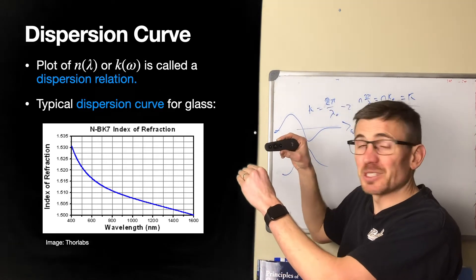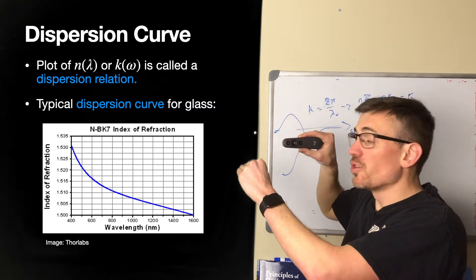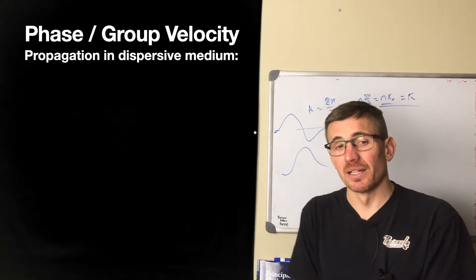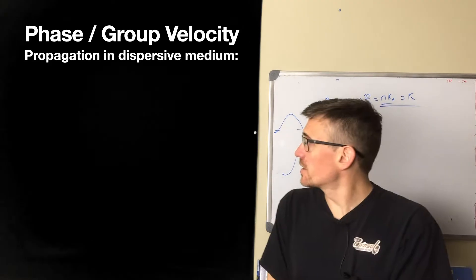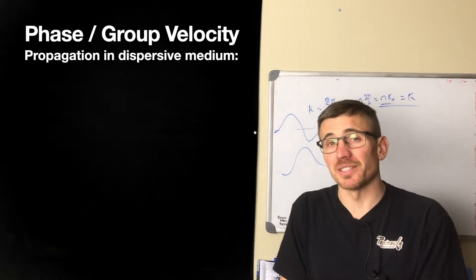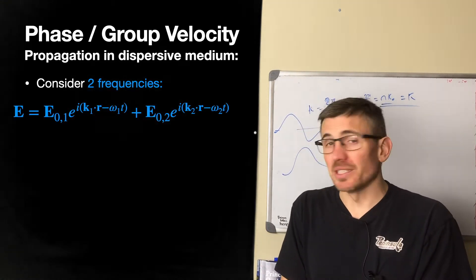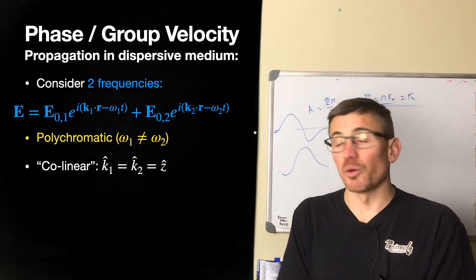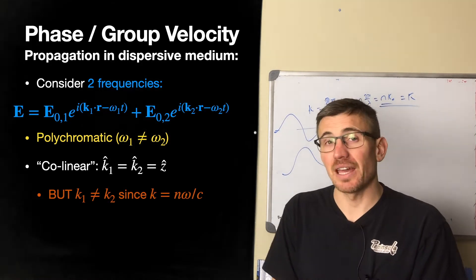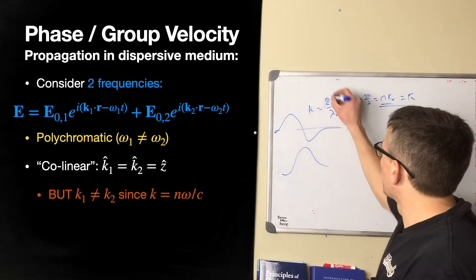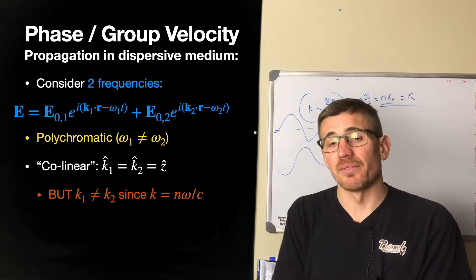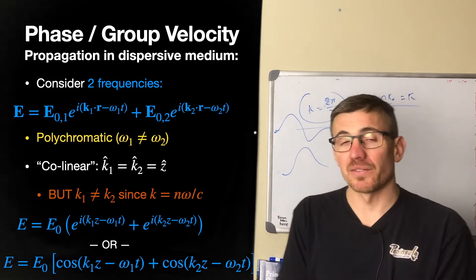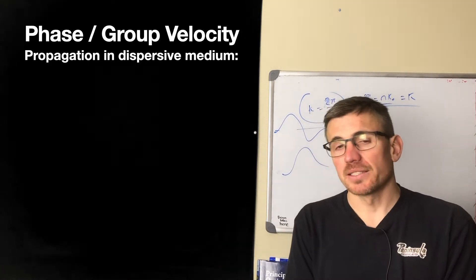Even if you're going at normal incidence, you still get very interesting things happening: different frequencies travel at different speeds. Let's start with a very simple case of two frequencies. We have omega 1 and omega 2 — polychromatic, two frequencies. They're collinear, both moving in the z direction. But k1 is not equal to k2, because k also depends on wavelength: k equals 2π over lambda. So the k's have the same direction but different magnitudes, in the z-hat direction. We can use cosines or sines, whichever is convenient.